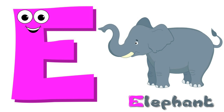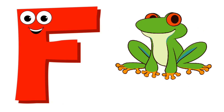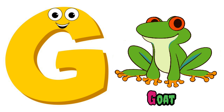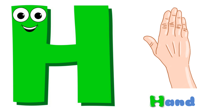E is for elephant, e-e-elephant. F is for frog, f-f-frog. G is for goat, g-g-goat. H is for hand, h-h-hand.